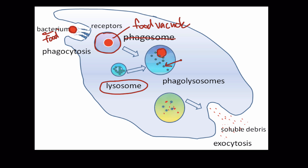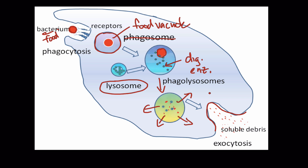These small structures are the digestive enzymes. As this process continues, the nutrients diffuse out or are transported out of the food vacuole, and what's left over is dumped by way of exocytosis into the environment. What's drawn in red is what was once the membrane of the food vacuole — that's how this whole process works.